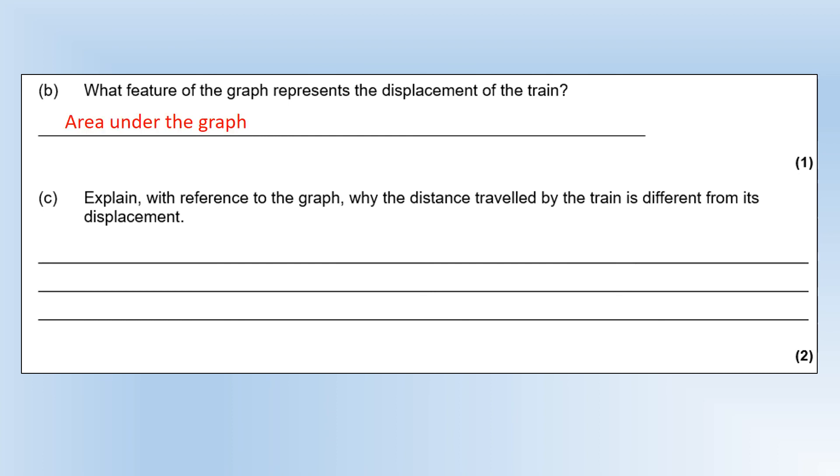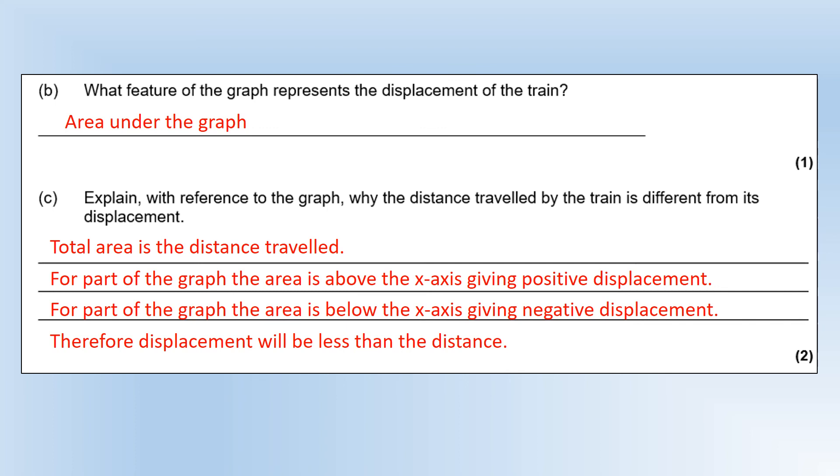Using the graph, explain why the distance traveled is different from the displacement. Distance is a scalar, so we just add up all of the area—it doesn't matter if it's above or below the axis. But for displacement it can be positive or negative. The area above the graph from A to D is positive displacement; later on it goes below the x-axis giving negative displacement. When we add them together, that's going to essentially decrease the displacement, so it's going to be less than the distance we've traveled.